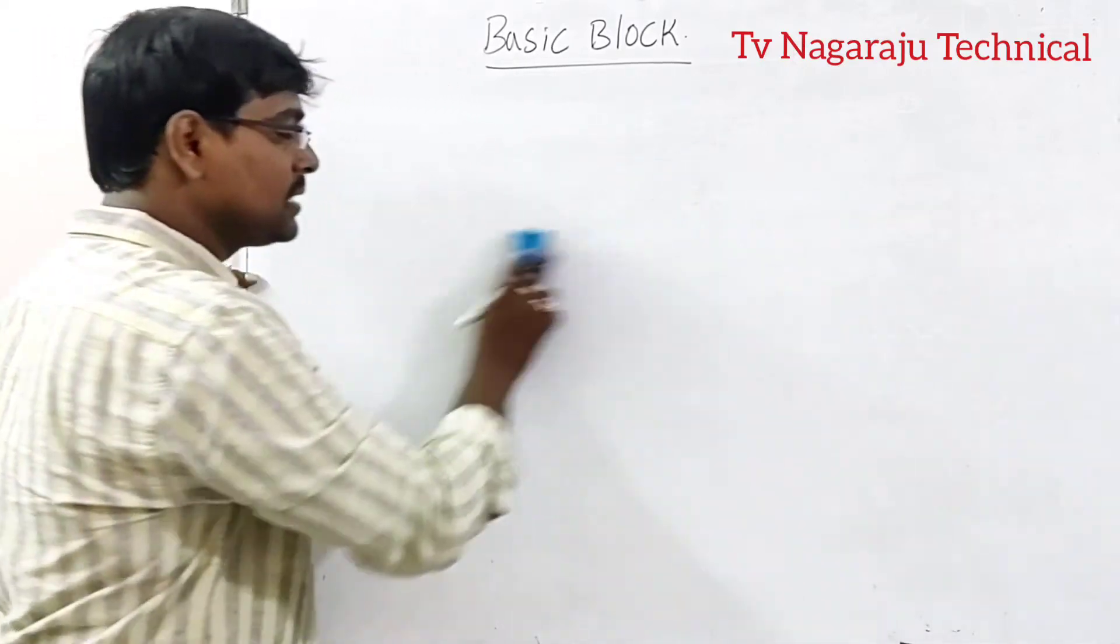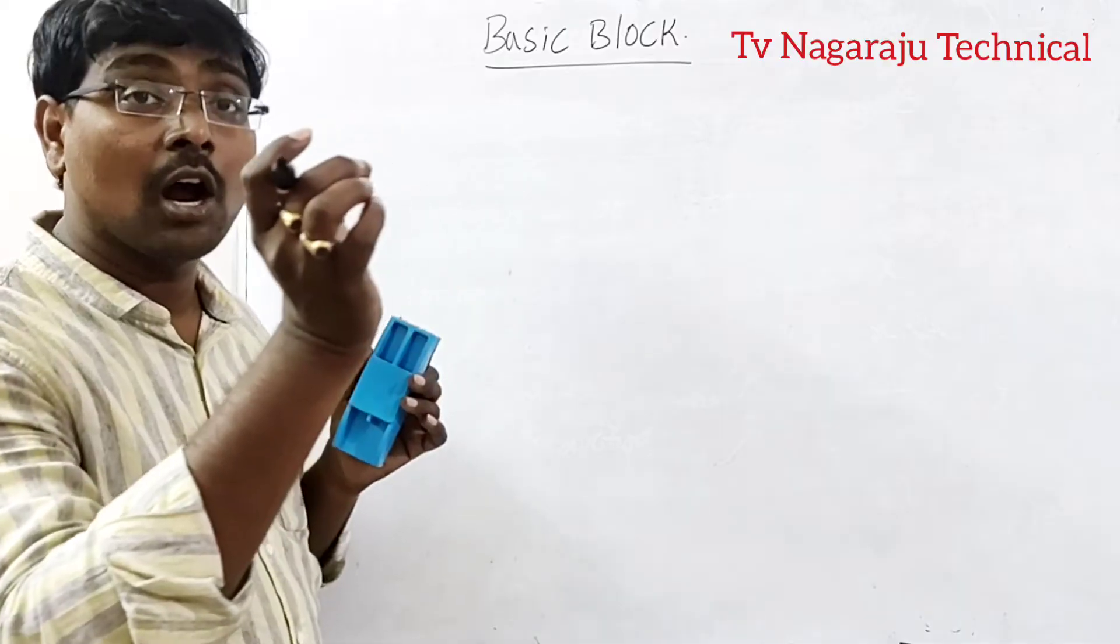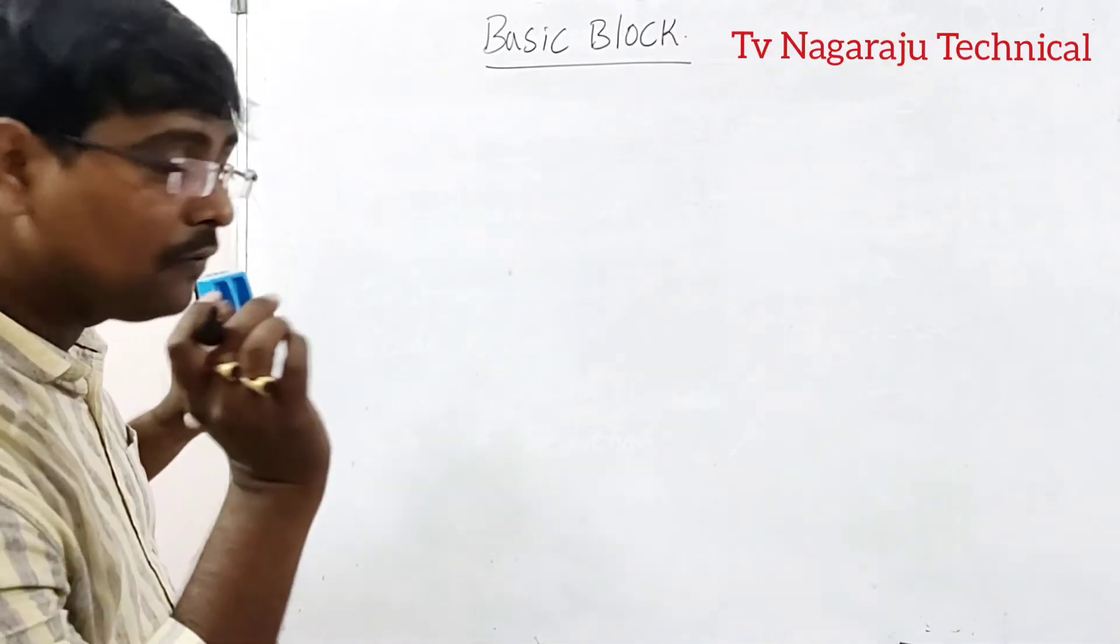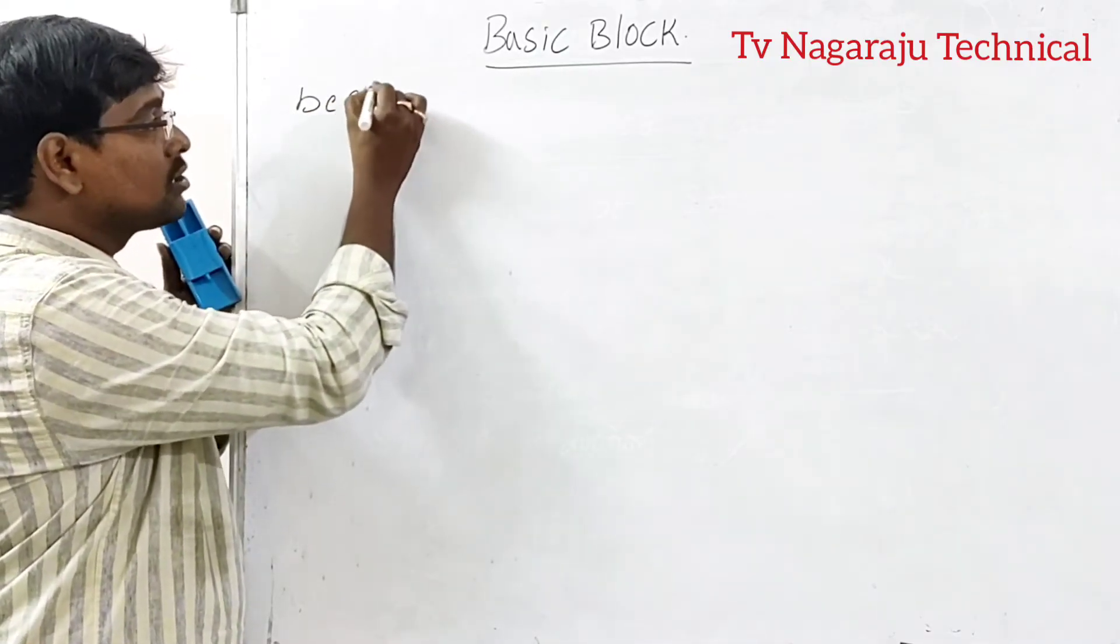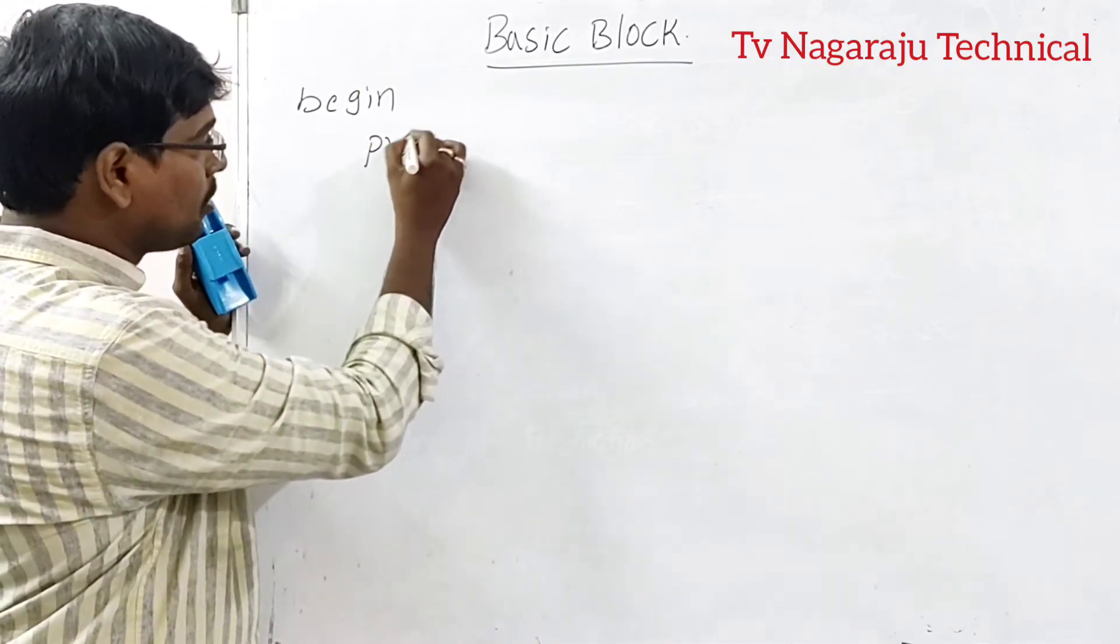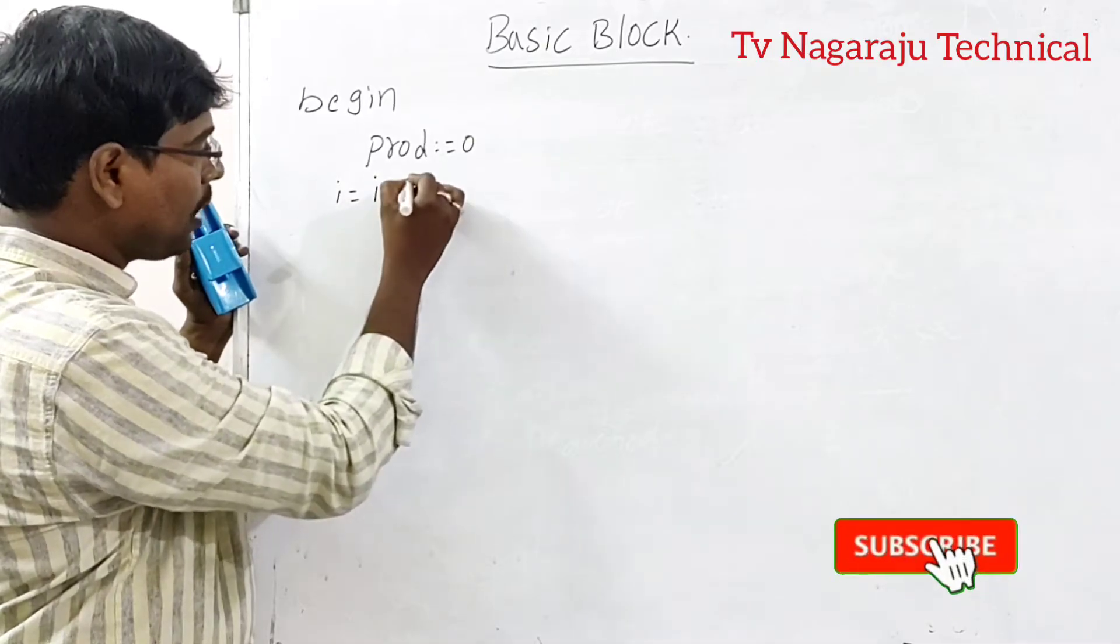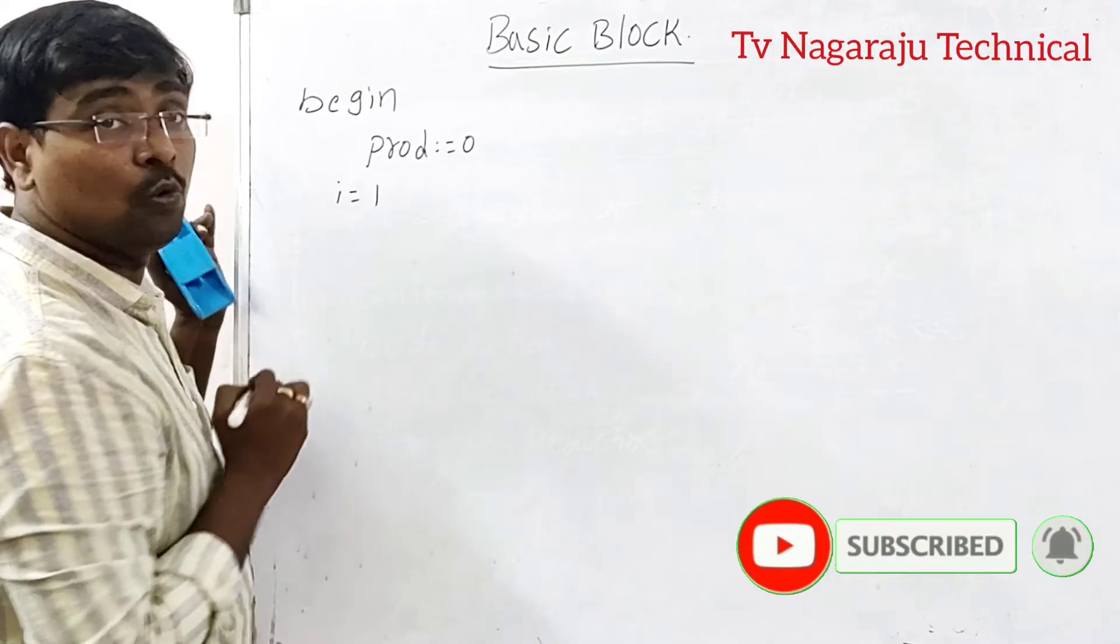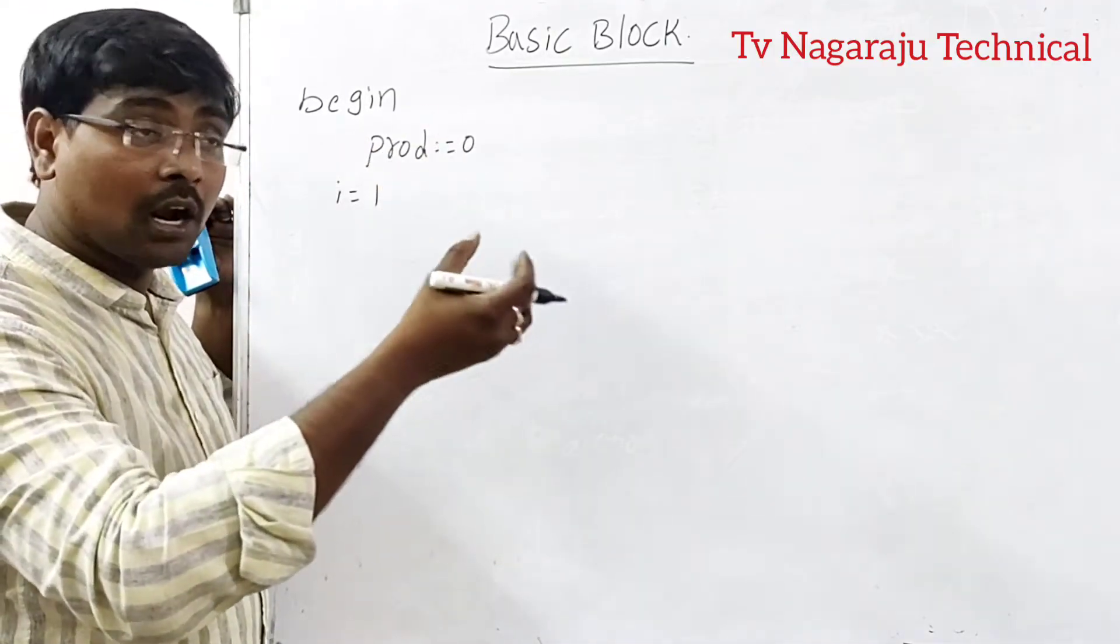Here my example is: consider two vectors, find out the dot product of two vectors. First I will write down the source code. Begin. Product is equal to 0. I is equal to 1, initially.